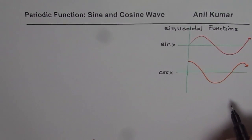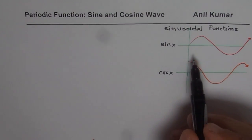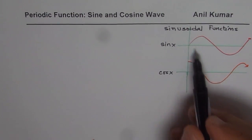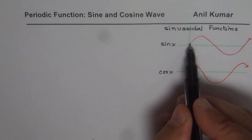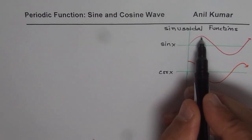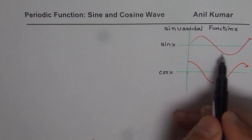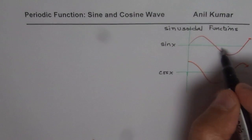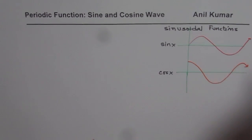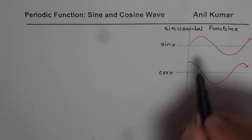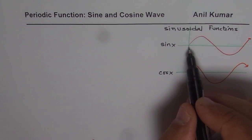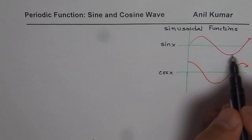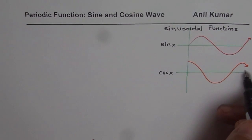Before getting into details, let me show you how from one wave we can get the other. If I move the sine wave left by a quarter of the cycle, we can derive the cosine wave. Let's look into the sine function and cosine function in further detail.